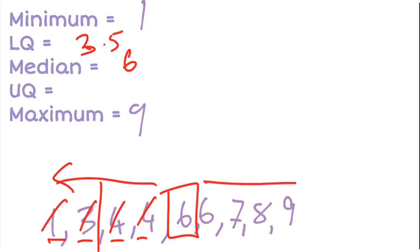Now I'm going to look for the upper quartile, look at the values above the median. And again, halfway between those is halfway between 7 and 8. So that will be 7.5.